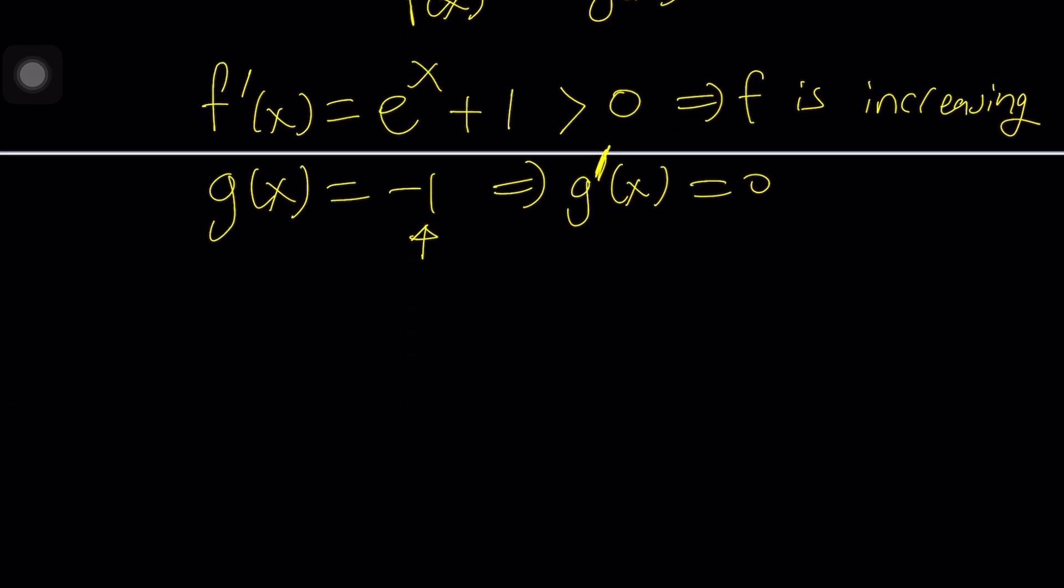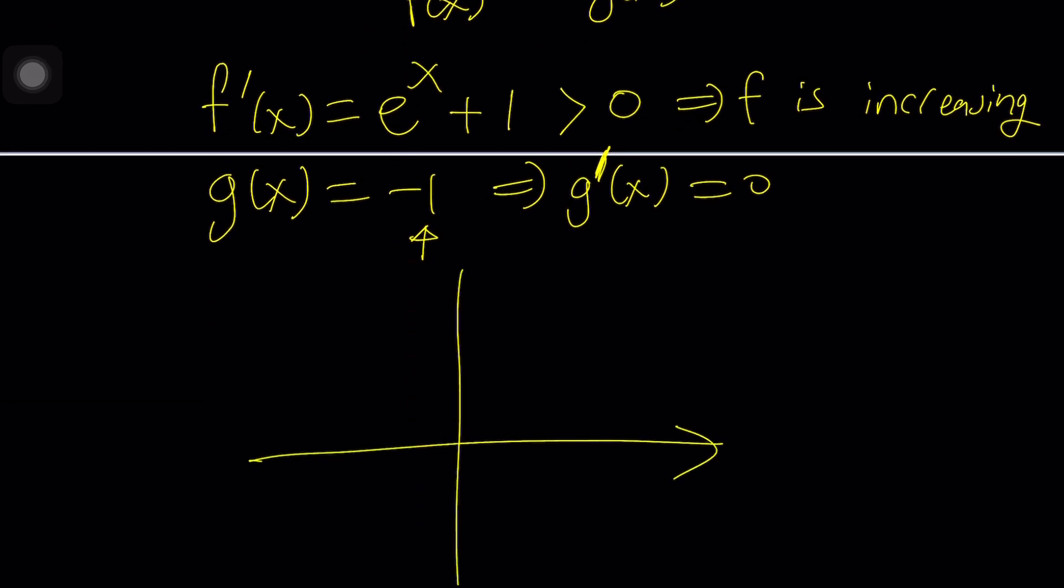So it's a horizontal line. If you graph it, it's going to look like this. G of X is negative 1. It's probably going to look something like this, going through negative 1. Awesome.